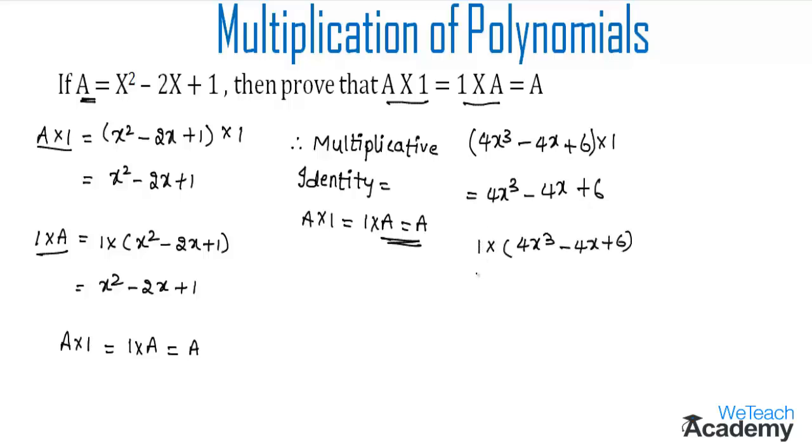Now let us multiply 1 with the polynomial. We get 1 into 4x³ as 4x³, 1 into -4x is -4x, and 1 six times is 6. Here we observe that both polynomials are equal. Therefore, we conclude that A × 1 = 1 × A = A.